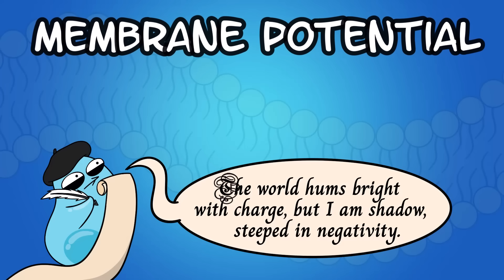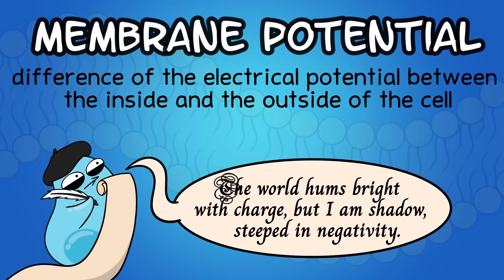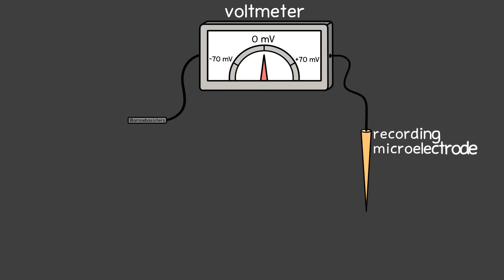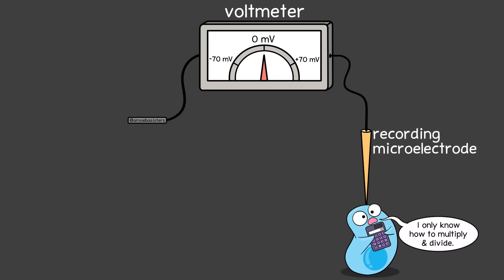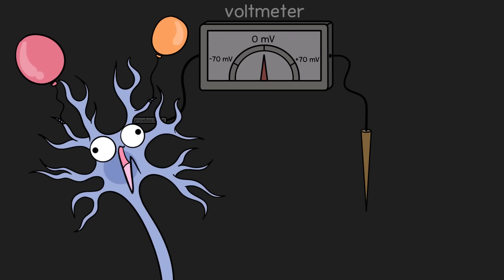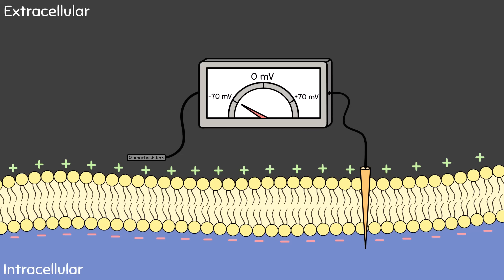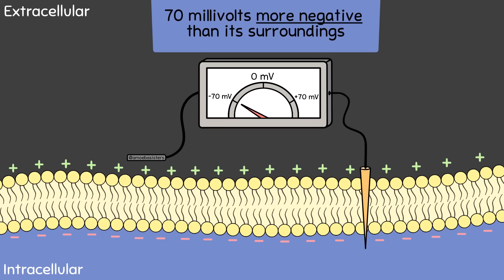Membrane potential is the difference in electrical potential between the inside and outside of the cell. You could use a recording microelectrode inside the cell to compare the charge inside with the charge outside using a reference electrode. If the reference electrode outside is set at zero, the recording microelectrode shows how the electrical potential changes inside the cell. For a neuron at rest, its membrane potential is negative 70 millivolts, meaning it is 70 millivolts more negative than its surroundings. This is its resting membrane potential.